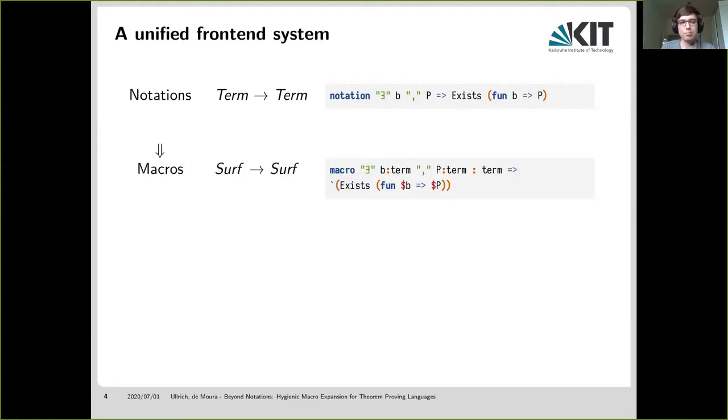So below notations, we have general macros, which are arbitrary surface syntax to surface syntax transformations. So if we look at our notation as a macro, we see that the syntactic categories of the inputs and the output are now explicit. And as well on the right-hand side, it is now explicit what is a syntax quotation and what are placeholders inside this quotation. Because the right-hand side can now actually be an arbitrary computation that returns a surface syntax tree.